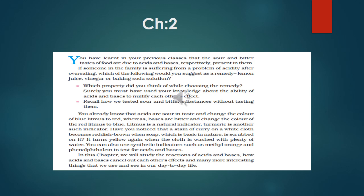You already learned that acids are sour in taste and change the color of blue litmus into red, whereas bases are bitter and change the color of red litmus into blue. These are the difference between acid and base. Litmus is a natural indicator, turmeric is also a natural indicator.